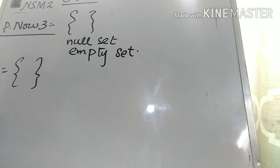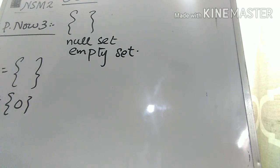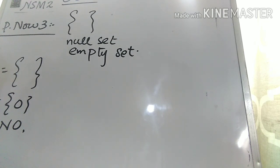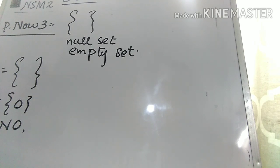In part 2, are P and Q equal sets? Q equals {0}, which contains the element 0. P is an empty set with no elements, while Q has one element, which is 0. So P and Q are not equal sets. I hope today's lecture is clear to you. If you like my videos and want more help regarding your subject, kindly subscribe to this channel by clicking the red button below the video. Thank you very much and Allah Hafiz.